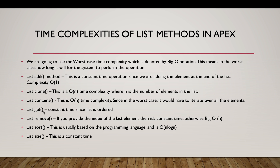The remove() method is interesting: if we remove the last element it is O(1), but otherwise it is O(n). For example, removing the first element requires shifting all remaining elements one position backward, making it an O(n) operation.